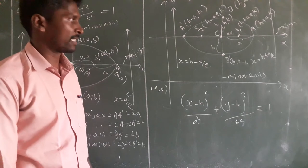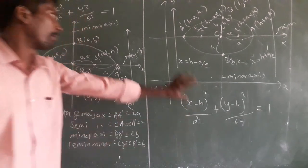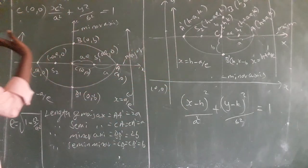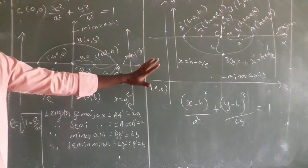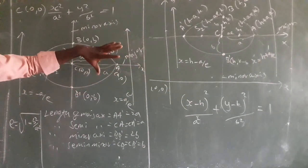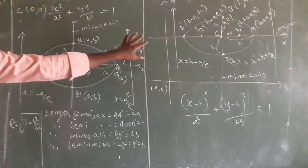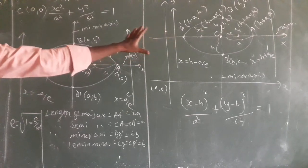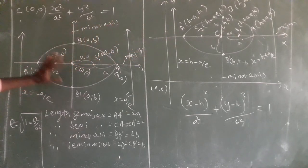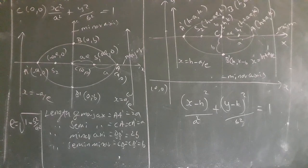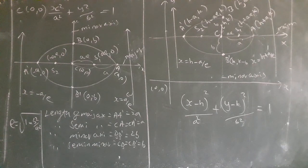So B and B dash. We compare and learn — it is very easy if we know the diagram. Center (h, k) and center (0,0): we compare how we are taking the ellipse. Then the second type — parallel to y-axis — we will see in the next video.